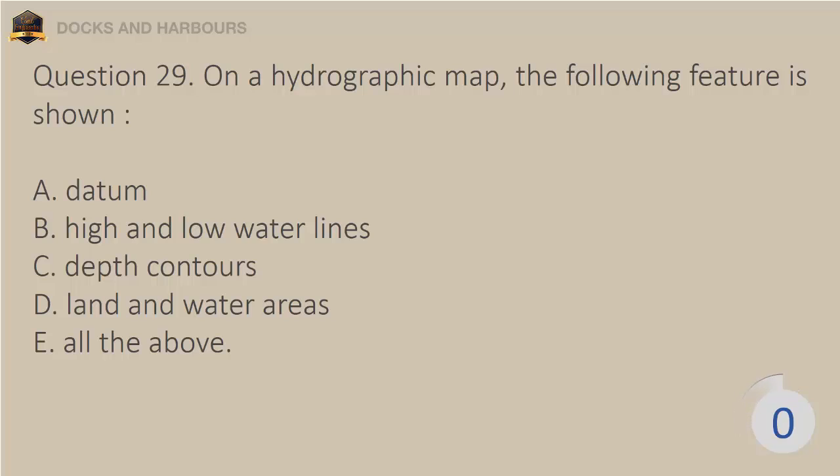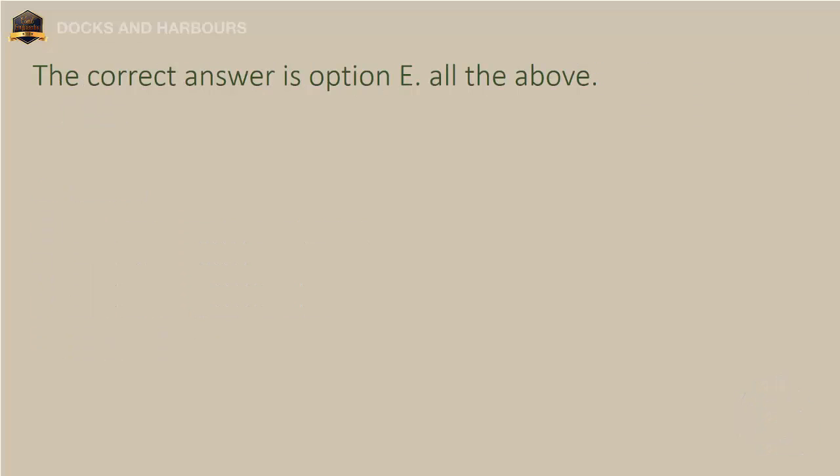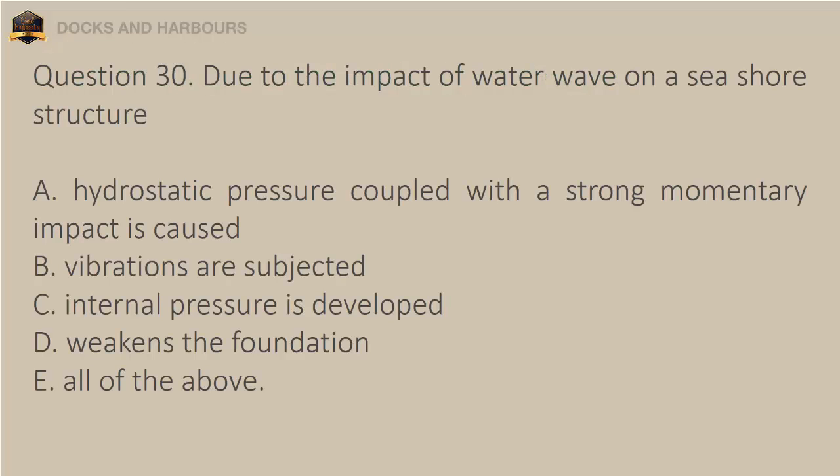Question 30. Due to the impact of water waves on a seashore structure: a. A hydrostatic pressure coupled with a strong momentary impact is caused. b. Vibrations are induced. c. Internal pressure is developed. d. Foundation is weakened. e. All of the above. The correct answer is option E: All of the above.